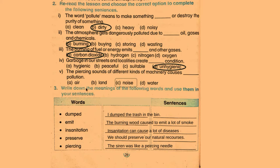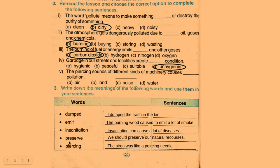Number 2: Write down the meanings of the following words and use them in sentences. I am not going to tell you the meanings because I have already done them in my previous lecture, so I am just going to make their sentences. 'Dumped': I dumped the trash in the bin. 'Emit': The burning would cause to emit a lot of smoke. 'Insanitation': Insanitation can cause a lot of diseases. 'Preserve': We should preserve our natural resources. 'Piercing': The siren was like a piercing needle.